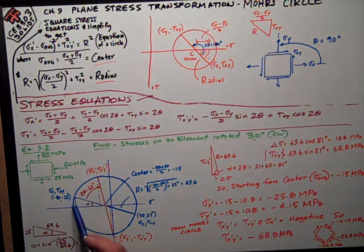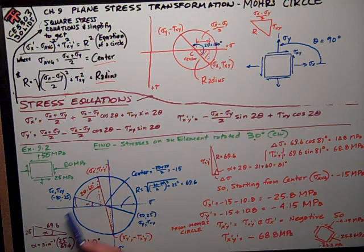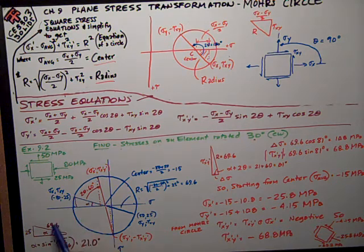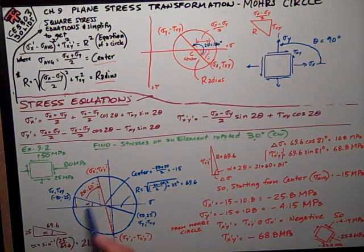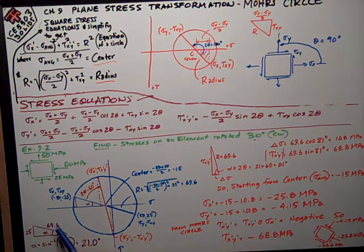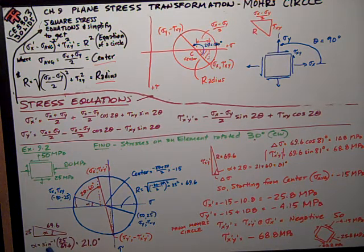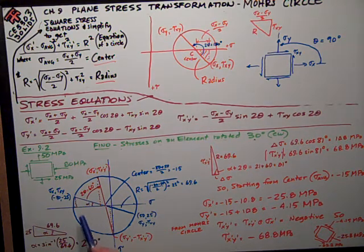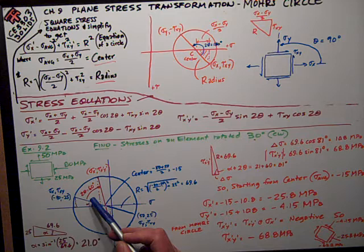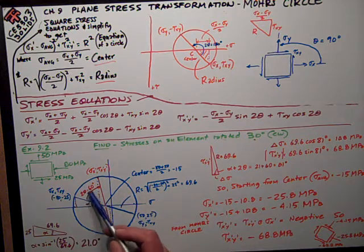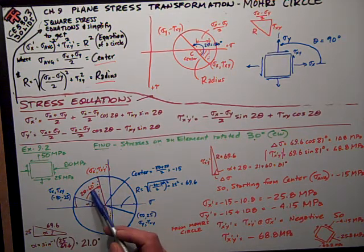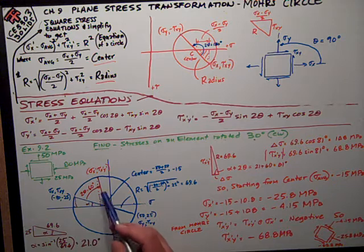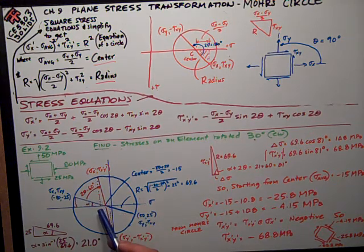First I want to figure out the angle alpha from sigma x, tau xy to this horizontal axis. I just draw a little triangle over here. I know that this dimension is the shear stress 25, and this is the radius 69.6. Knowing that, I can figure what alpha is. This is the opposite over hypotenuse, sine inverse of that is 21 degrees.